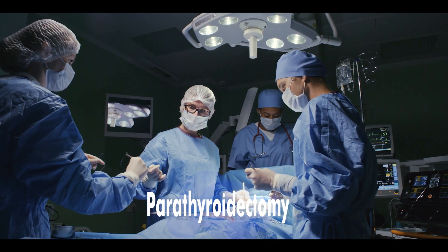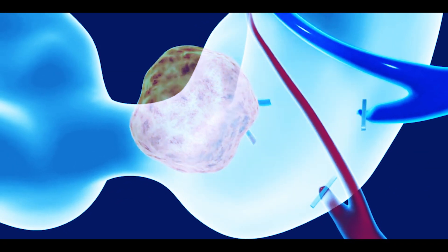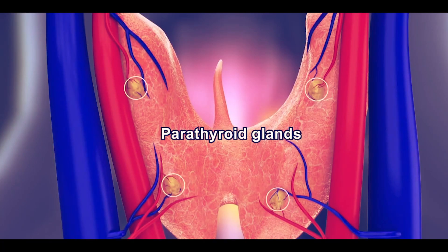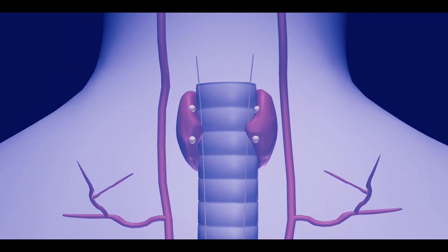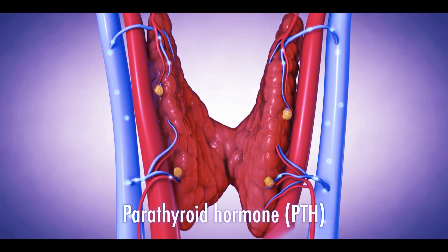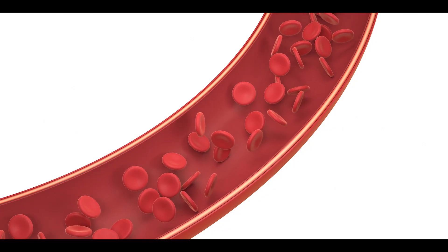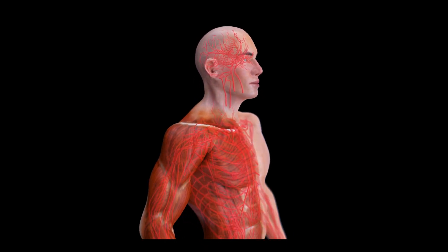Parathyroidectomy is a surgical procedure to remove abnormal or diseased parathyroid glands. Humans have four oval-shaped parathyroid glands located behind the thyroid glands in the neck. Parathyroid glands produce a special hormone called parathyroid hormone, or PTH. This hormone regulates calcium levels in the blood, which is essential for the proper functioning of body organs.